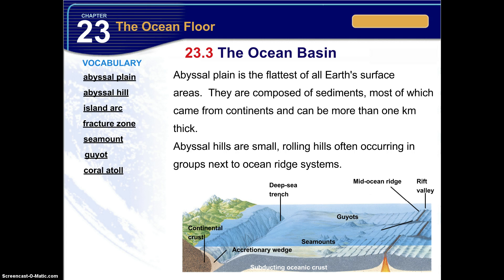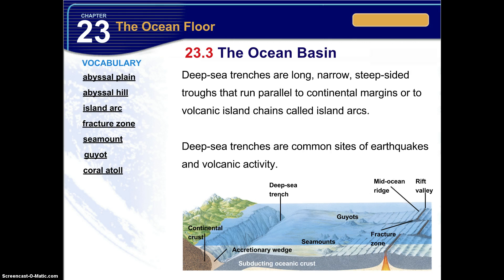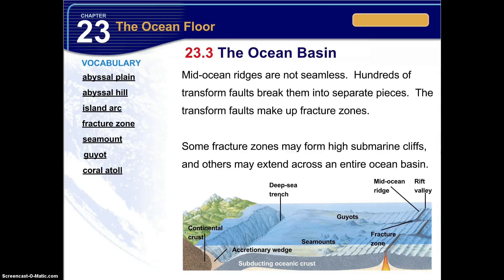We have the mid-ocean ridge, the rift valley in between the ridges of the mid-ocean ridge, and then we also have fracture zones. Deep sea trenches are long, narrow, steep-sided troughs that run parallel to continental margins or to volcanic island chains called island arcs, and they are common sites of earthquakes and volcanic activity. Mid-ocean ridges are not seamless — hundreds of transform faults break them into separate pieces, making up fracture zones. Some fracture zones may form high submarine cliffs and others may extend across an entire ocean basin.